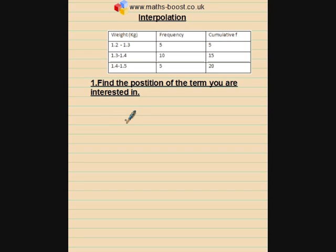The first step is to find the position of the term we're interested in. And we're interested in the median, so we want to find what position the middle term is in. Now when we work with grouped data like this, the technique is different to how we would find the position using discrete data.